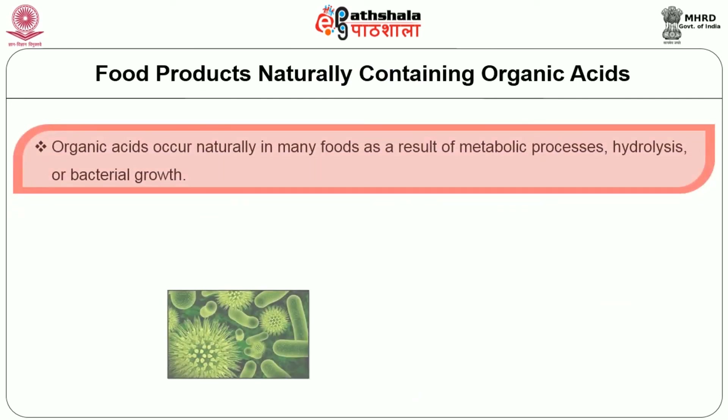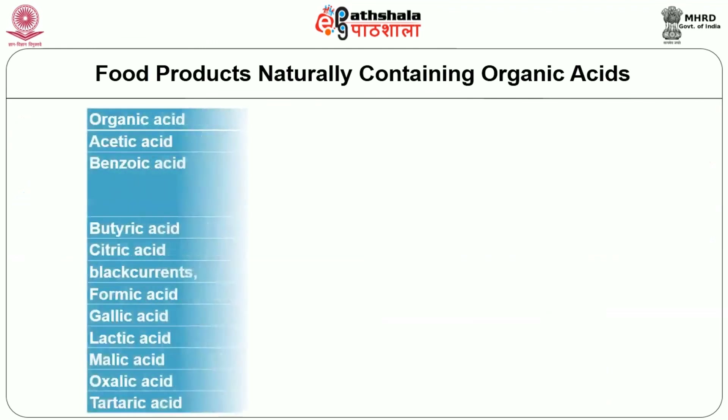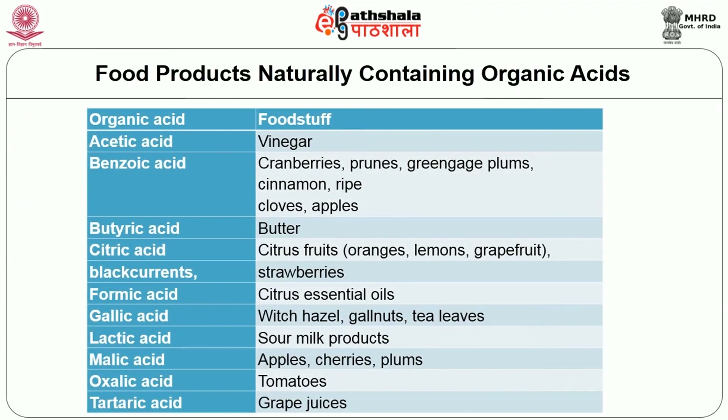Let us see some of the food products naturally containing organic acids. Organic acids occur naturally in many foods as a result of metabolic processes, hydrolysis or bacterial growth. Alternatively, they can be added directly to food as acidulants or flavorants. To conclude, organic acids are typical products of cell metabolism. Organic acids are important to biological processes since they are involved in various fundamental pathways in plant and animal metabolism and catabolism as intermediate or final products. The commonly used organic acids are citric acid, lactic acid, acetic acid, sorbic acid, ascorbic acid, benzoic acid, cinnamic acid, formic acid, gluconic acid, malic acid, tartaric acid and so on. Now we have got an idea about the nature and composition of organic acids.